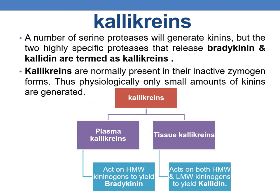Coming to callicrins: these are specific enzymes. A number of serine proteases will generate kinins, but the two highly specific proteases that release bradykinin and calidin are termed callicrins. The callicrins are normally present in their inactive zymogen forms, and thus physiologically only small amounts of kinins are generated. There are two types: plasma callicrin, which acts on high molecular weight kininogens to yield bradykinin, and tissue callicrin, which acts on both high and low molecular weight kininogens to yield calidin.